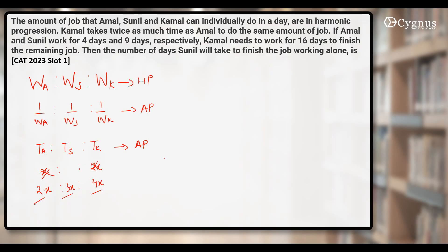Amal's one day work is 1/2x, and he worked for 4 days, so his contribution is 4 × (1/2x). Sunil's one day work is 1/3x, and he worked for 9 days, so his contribution is 9 × (1/3x). Kamal's one day work is 1/4x, and he worked for 16 days, so his contribution is 16 × (1/4x). The total must equal 1.